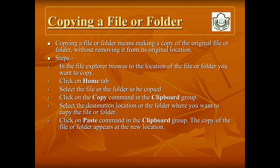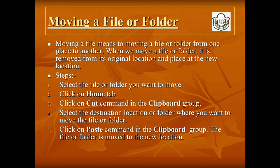Now, copying a file or folder. Copying means making a copy of the original file or folder without removing it from its original location. In File Explorer, browse to the location of the file or folder you want to copy. Click on the Home tab, then select the file or folder to be copied and click the Copy command in the Clipboard group. Then select the destination location or the folder where you want to copy, and click Paste in the Clipboard group.